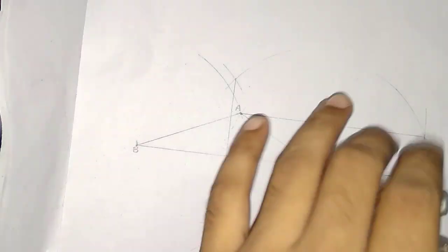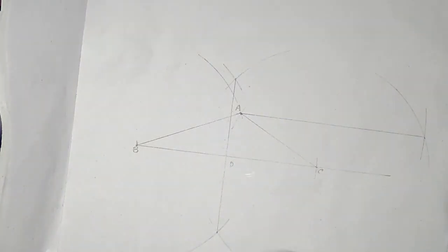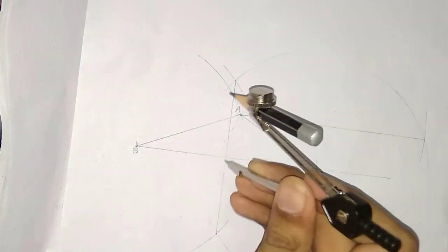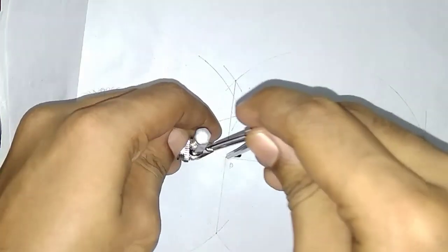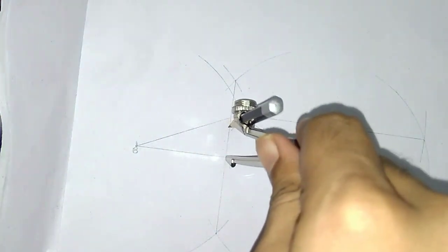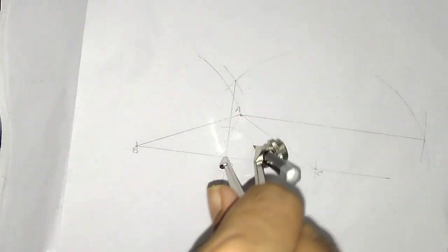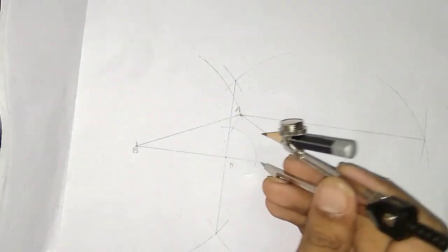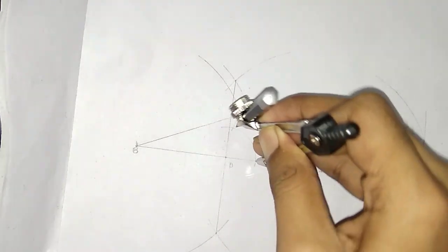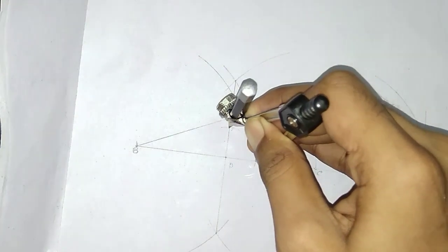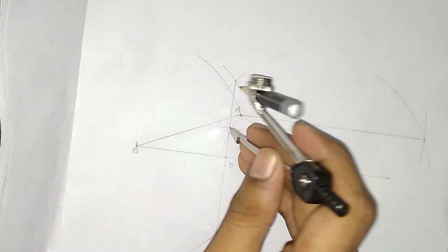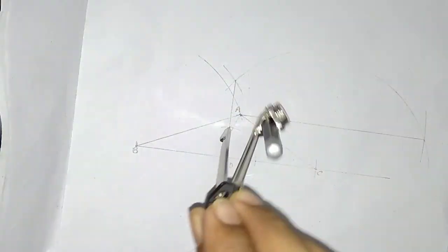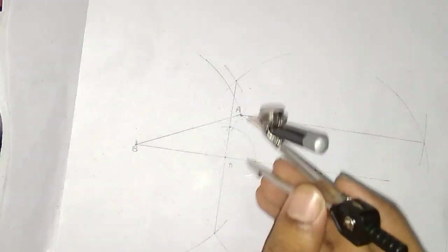Now we have to draw the given angle, which is 45 degrees, at this point. Before drawing 45 degrees, we need a 90-degree angle, so I will draw a 90-degree angle here. It is already done because this is the perpendicular bisector. I will just bisect this angle to get 45 degrees. One arc is here, and without changing the compass, another one on this side.